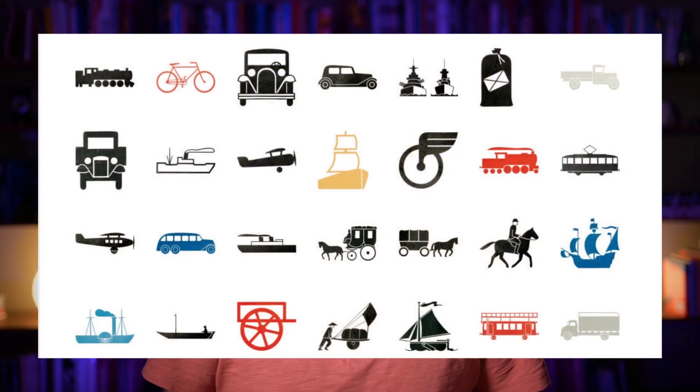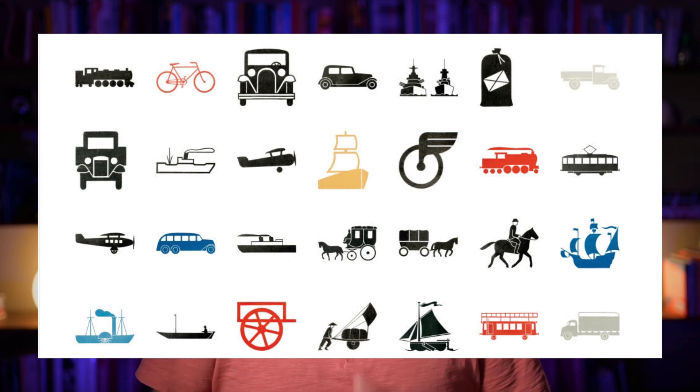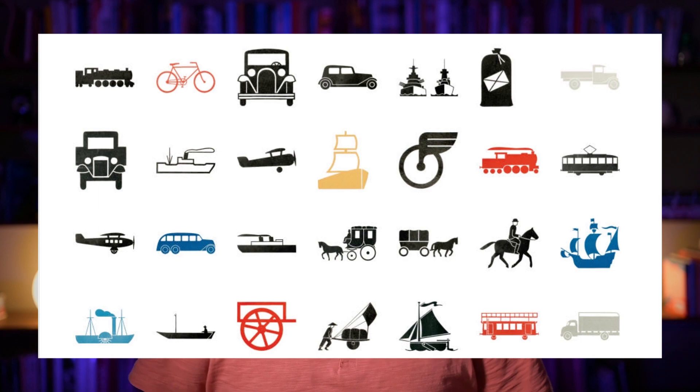Perhaps the most famous type of unit chart is called isotype. It was developed by Otto Neurath, together with his wife Marie Neurath, and the designer Gerhard Arntz, who developed many of these symbols that are still used today because they're very succinct, very effective, modern-style symbols.